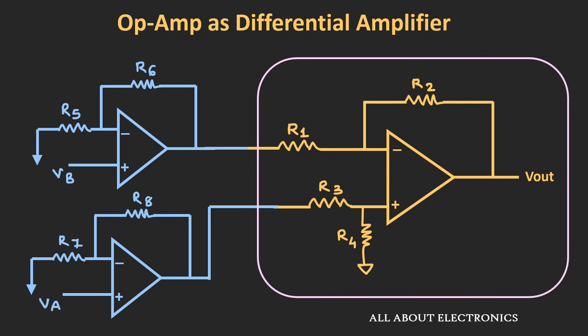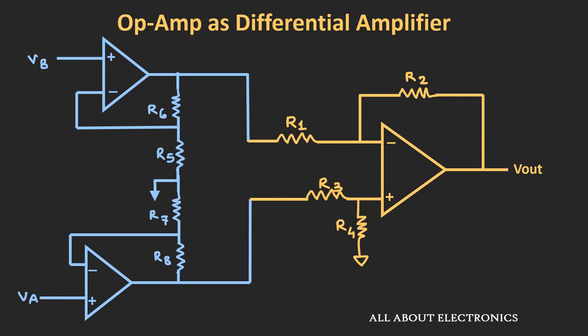One way to avoid the fixed-gain problem is to use non-inverting op-amps instead of buffer circuits. In this configuration, the initial gain is provided by the non-inverting amplifiers. However, the problem is that along with the differential input signal, the common mode input signal also gets amplified, so there is no improvement in the signal-to-noise ratio. Additionally, in this circuit you still need to match the four resistors, because any mismatch will again compromise the common mode rejection ratio.